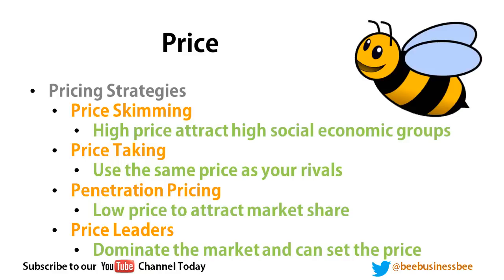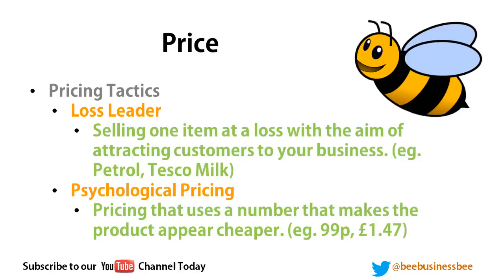Underneath strategies, you have short-term pricing tactics. A loss leader means selling a product at a loss to get customers into your business. Supermarkets like Tesco sell milk at a loss, because customers who come in for cheap milk also buy bread, eggs, drinks, and sandwiches — generating 70–80p profit overall from that customer who otherwise wouldn't have visited.